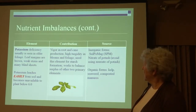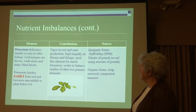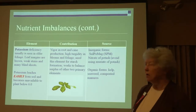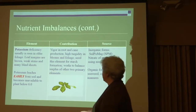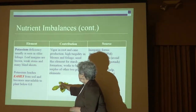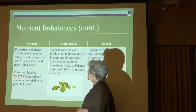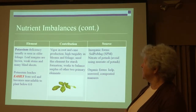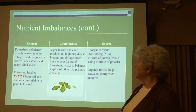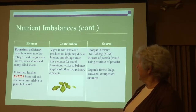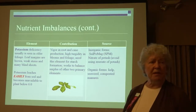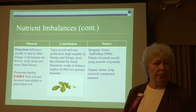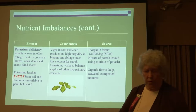Potassium deficiency is a little harder — it kind of looks like almost everything else that might go wrong, except that the edges of the leaf will start getting very brittle, they might crack and then start turning brown, usually the older foliage. Potassium can leach out and you'll be losing it through water runoff.